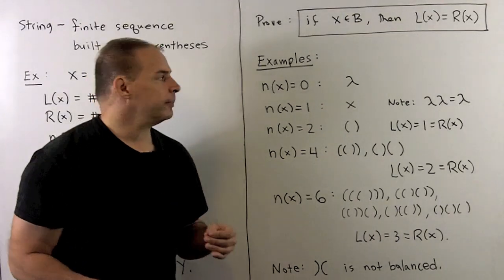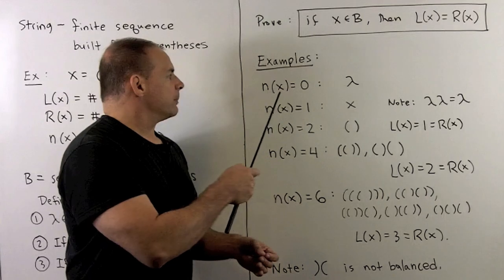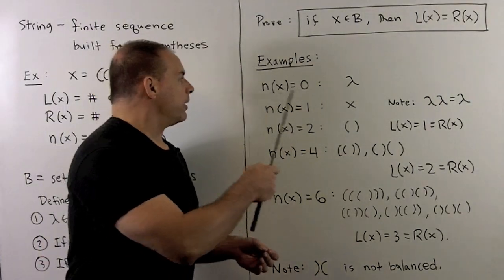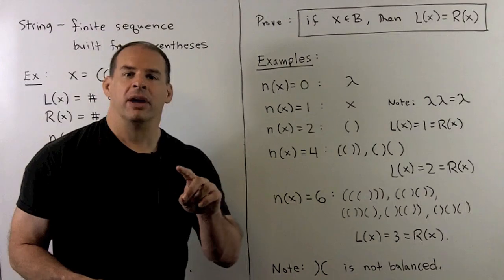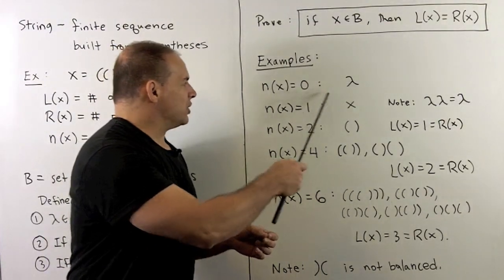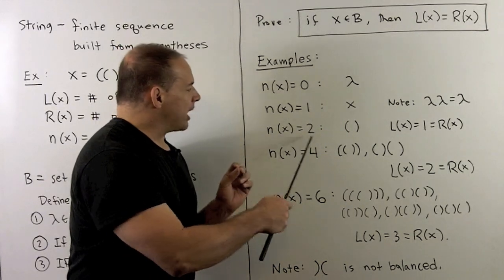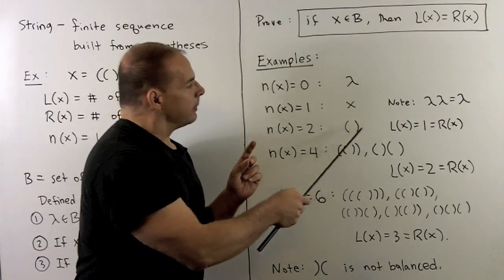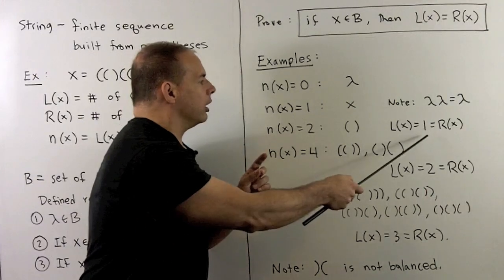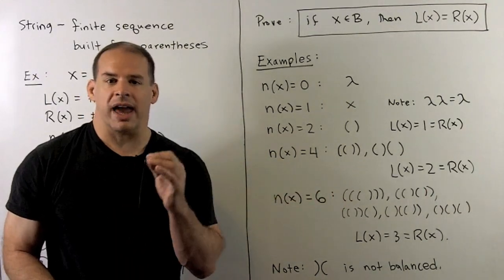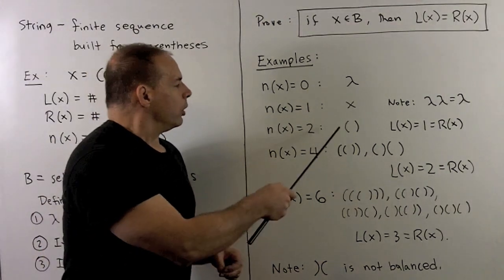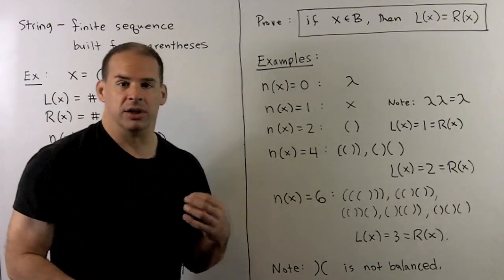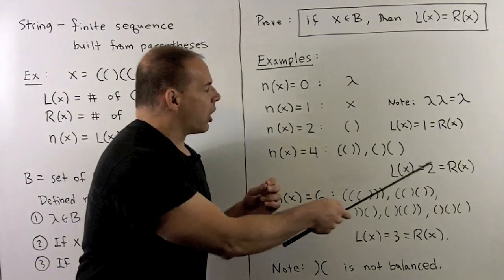We'll just build up from scratch. If we go by length of strings, for length zero we only have the empty string. By definition, that's balanced. A little bit of thought shows we'll never have balanced strings of odd length, so we go directly from length zero to length two. The only balanced string of length two is left-right, and we have l(x) = r(x) = 1. Going to the next length, equal to four, we could take this balanced string of length two, put it in parentheses or concatenate with itself, and that's all we can do. We note l(x) = r(x) = 2.